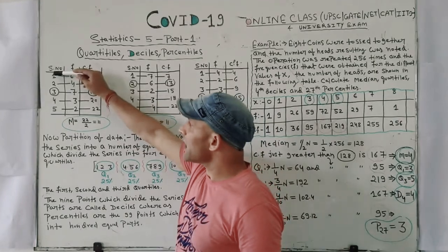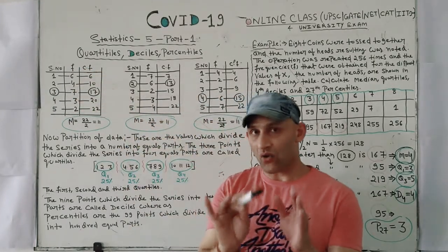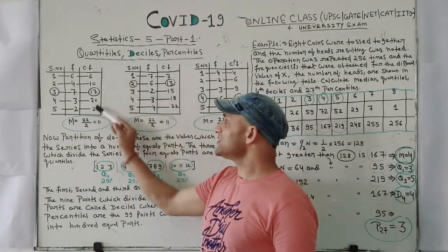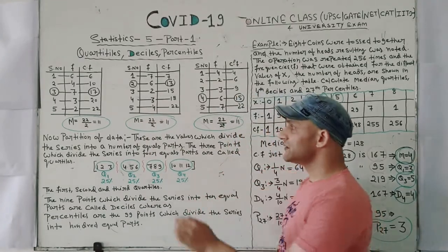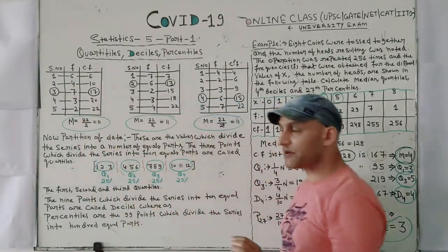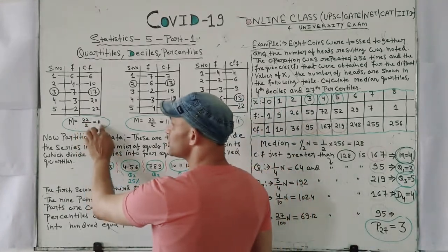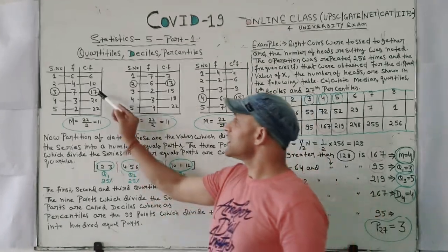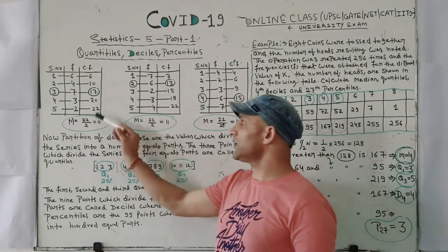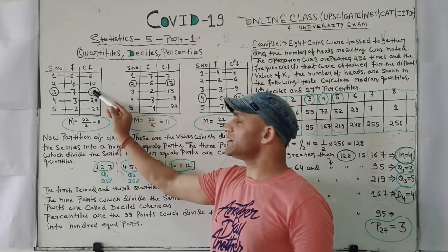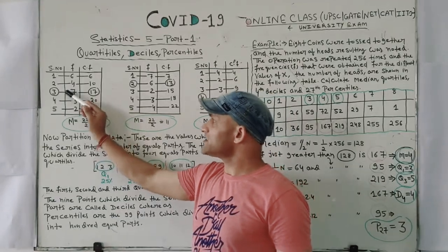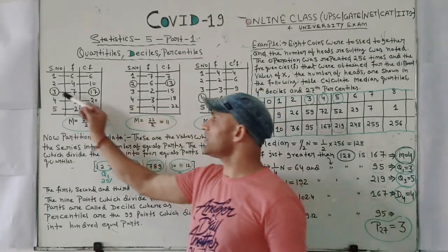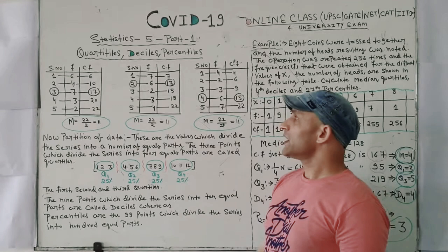When the total data count is odd, you use the formula n/2, where n is the sum of all frequencies. The sum of all frequencies is 22, so 22/2 = 11. The cumulative frequency value 17 holds 11, meaning 11 falls inside 17. So your median is 3.